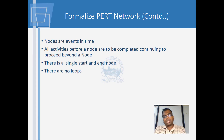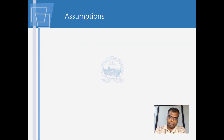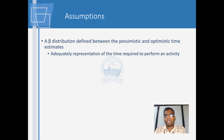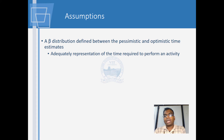There is always a single start and a single end, and there should not be any loops — it is the same as in CPM. Here are the assumptions which make PERT different. We find that it uses a beta distribution between the pessimistic and optimistic time to represent the time required for each activity. We still need realism in the values of the optimistic and pessimistic times.